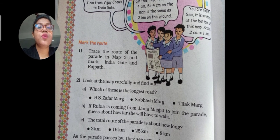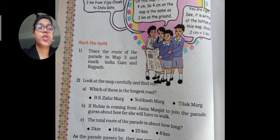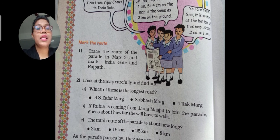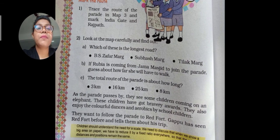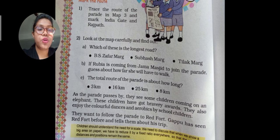Now mark the route of the parade in Map 3. From the parade map we have seen, you have to find out the answers and mark India Gate and Rajpath. Now look at the map carefully and find the answers to the following questions. This will be your homework — these three MCQs you have to solve on your own from the map.